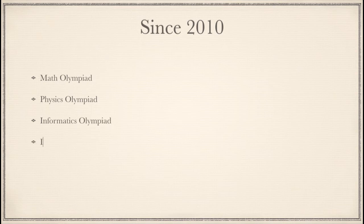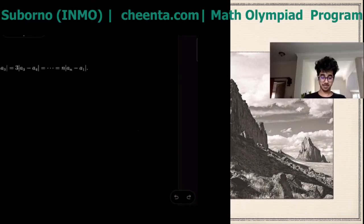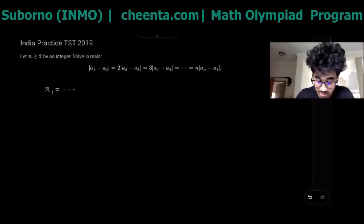Okay so hopefully all of you have tried it on your own. Let's try and understand what the question is saying. We need to solve this equation in real numbers and the first thing we can do is begin with guessing the most obvious solution. We can just see that if all the values are equal then the statement is obviously true.